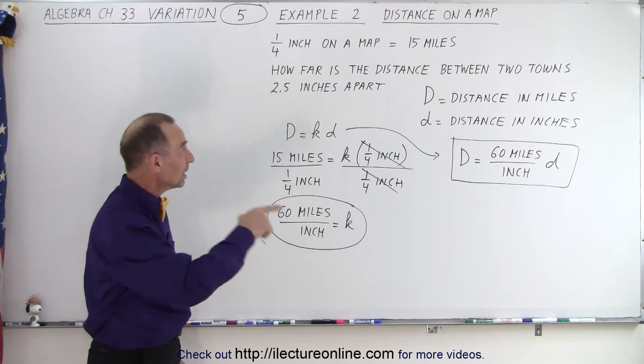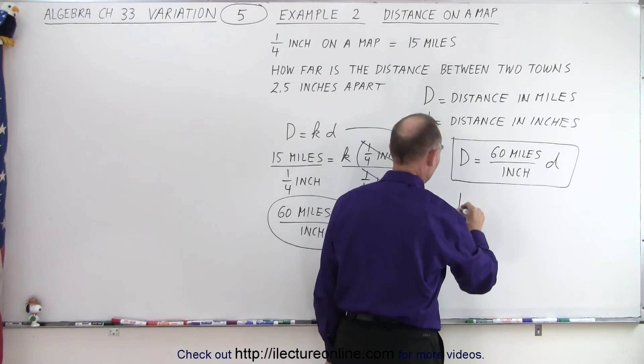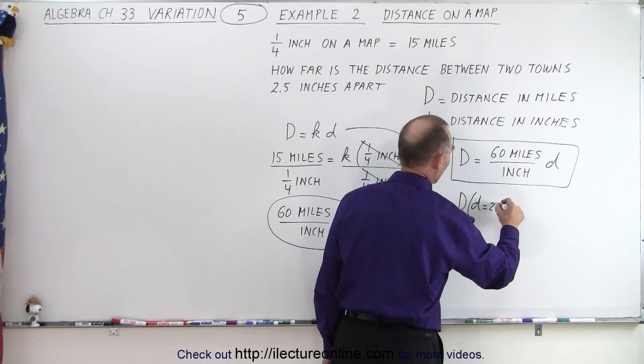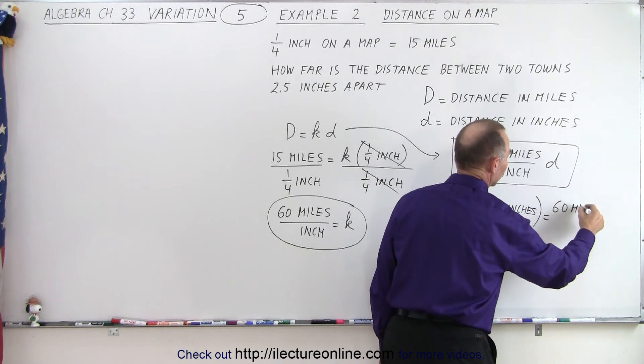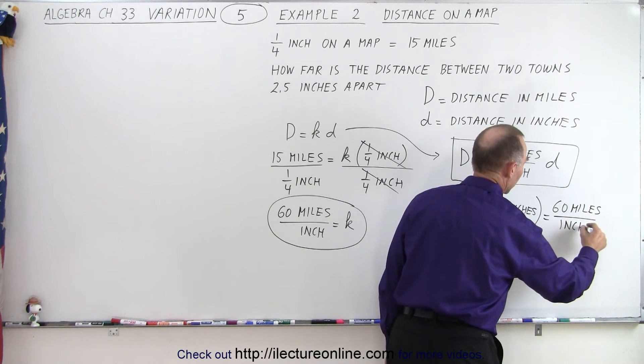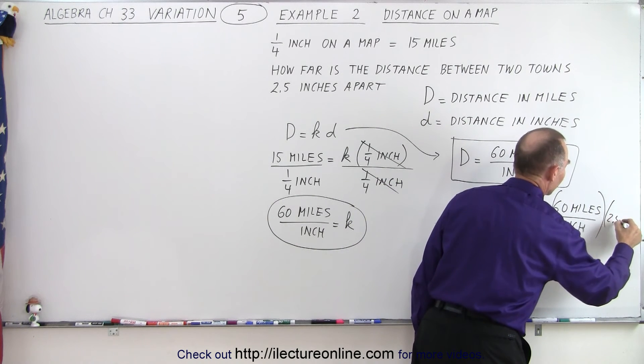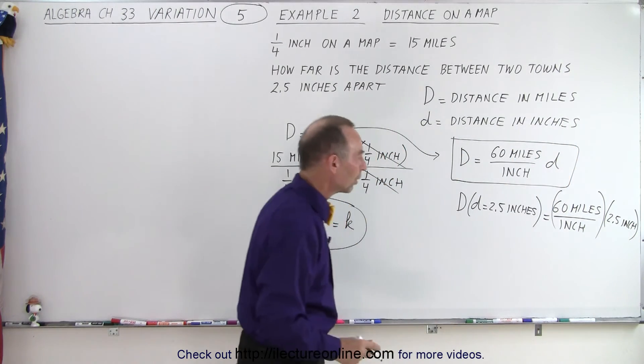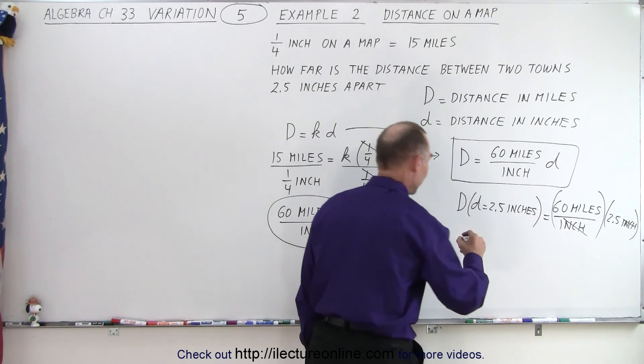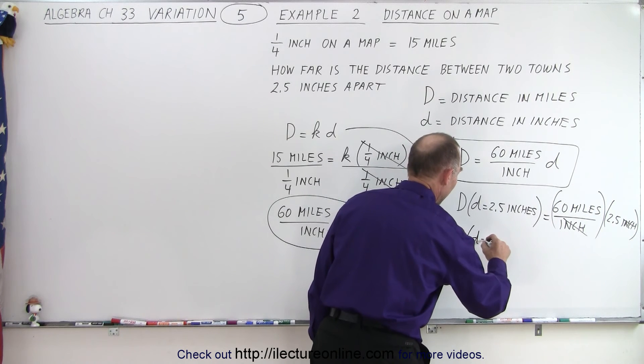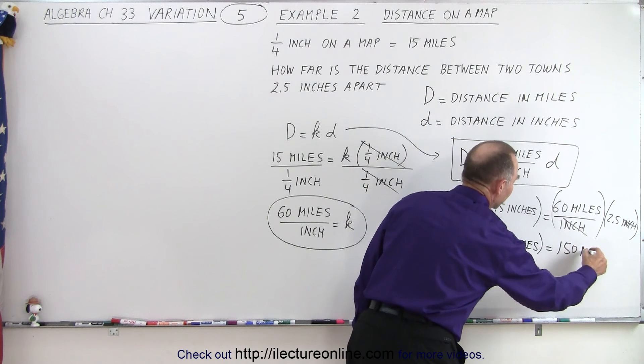Now we need to find out what D is, the distance between towns, if the distance on the map is two and a half inches. So the distance when little d equals 2.5 inches is equal to 60 miles per inch multiplied times 2.5 inches. Now we notice that the inches cancel out, and two and a half times 60 is 150. So the distance is equal to 150 miles.